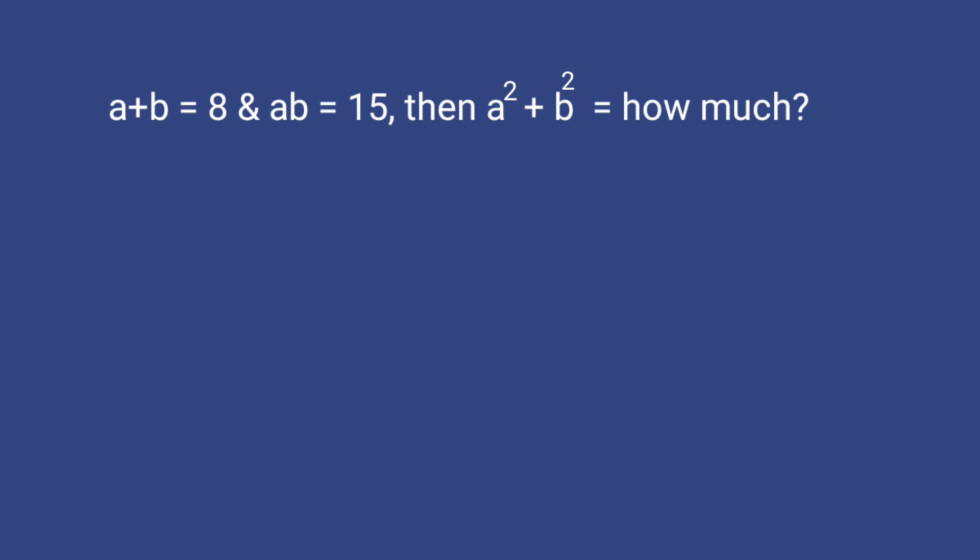Now we can apply here A plus B whole square formula. So A plus B whole square is equal to A square plus B square plus 2AB.